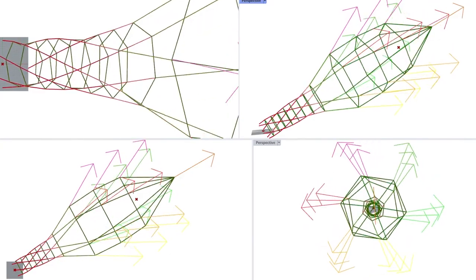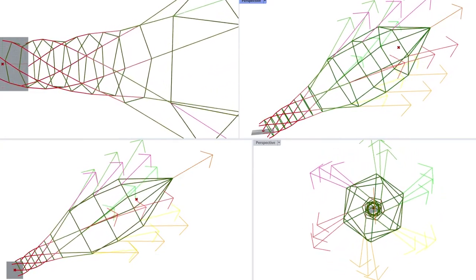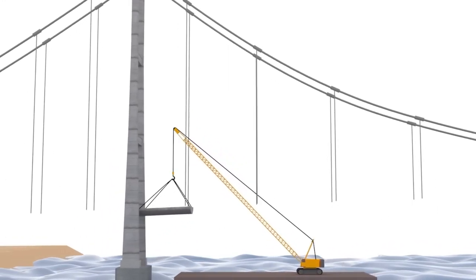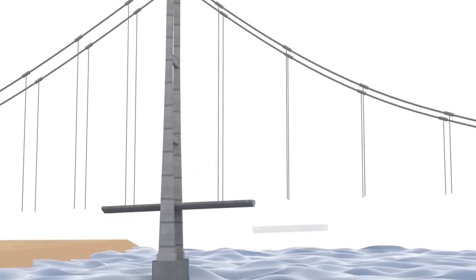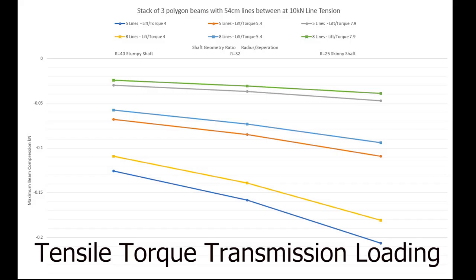The same pattern of structures growing and then changing to tension based designs happened in bridges and stadiums. Tension design aligns material with forces to make very efficient structures.